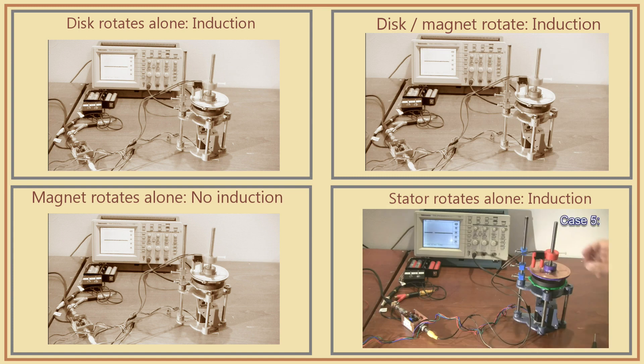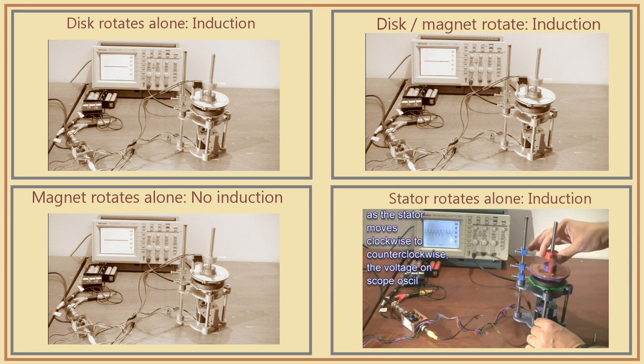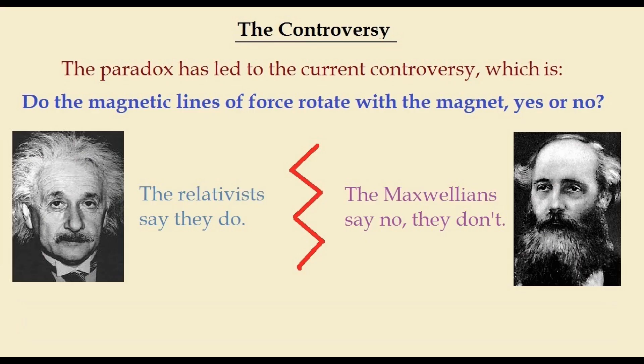The results have led to some controversy, since they can be explained by either the magnetic field rotating with the magnet, or the magnetic field remaining stationary when the magnet rotates. So which explanation is right?